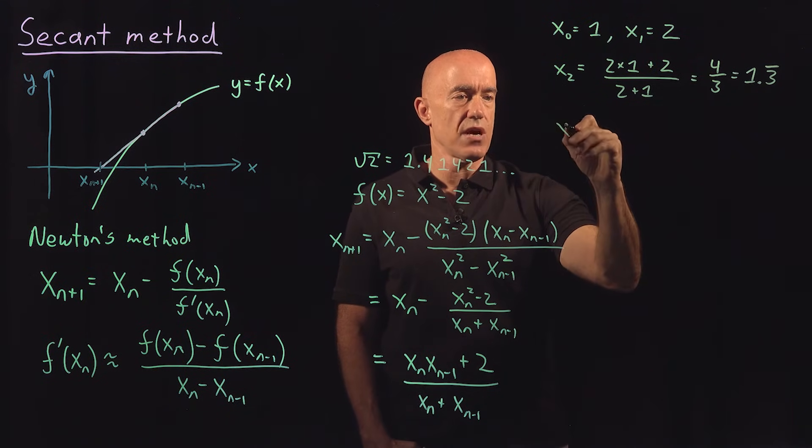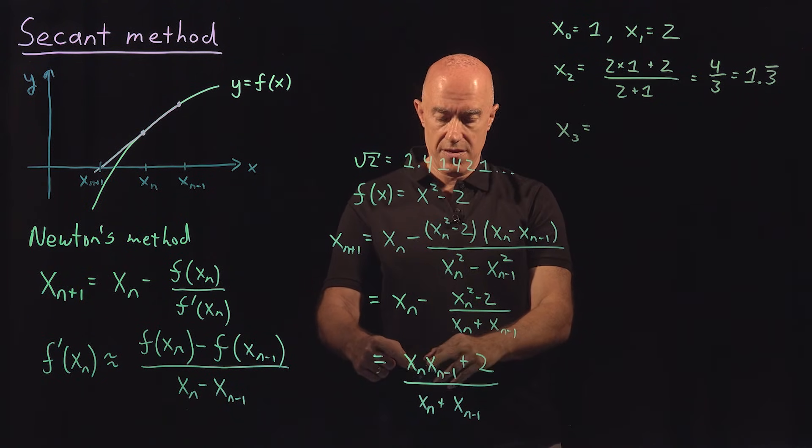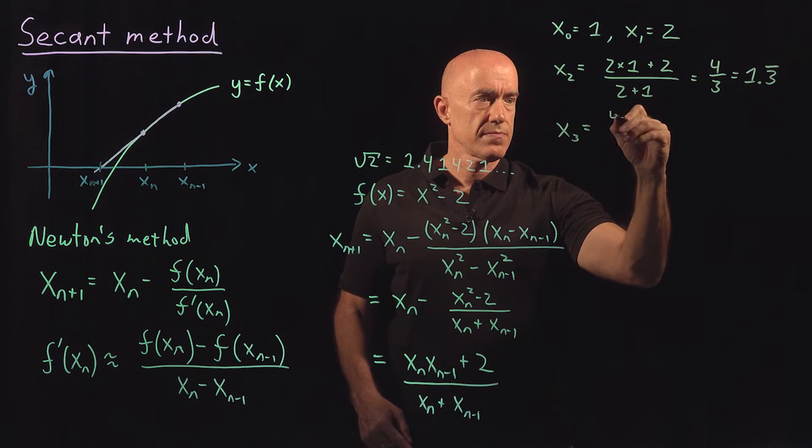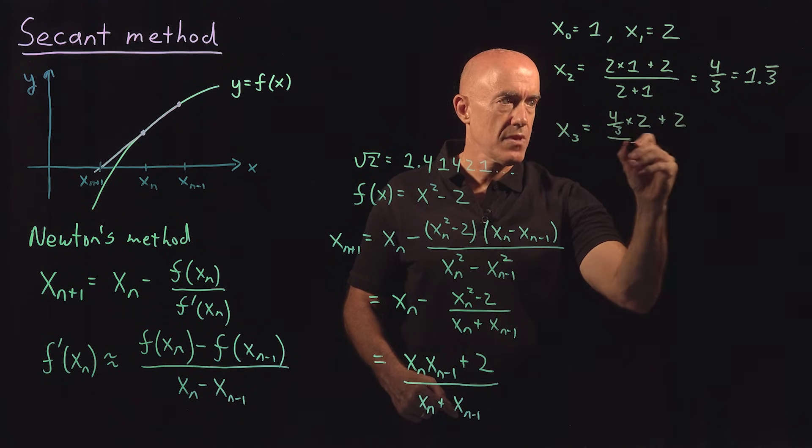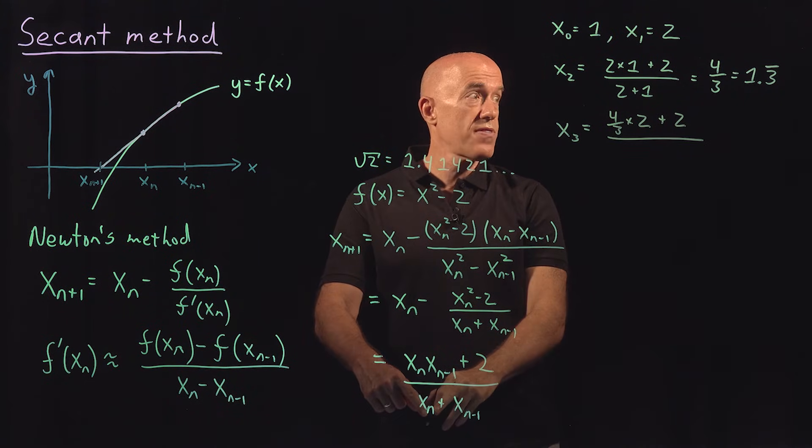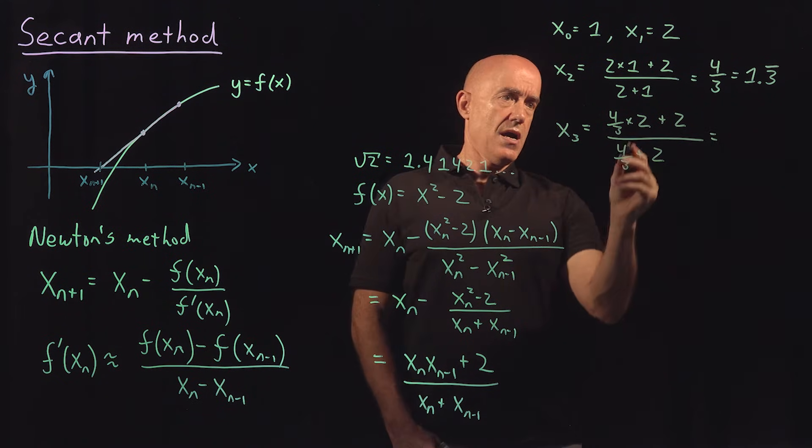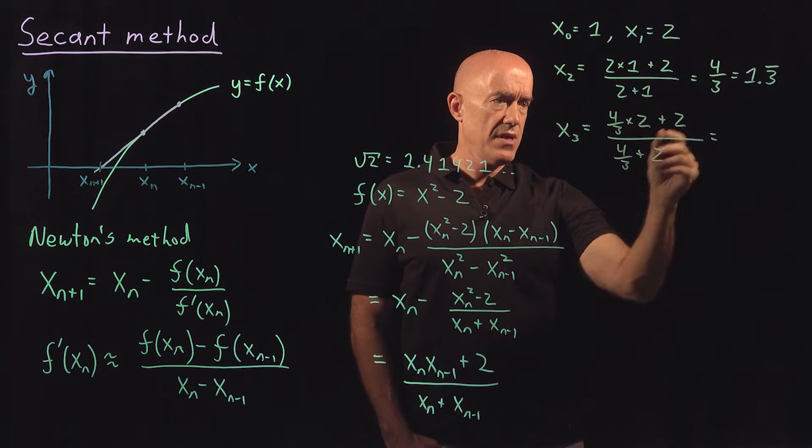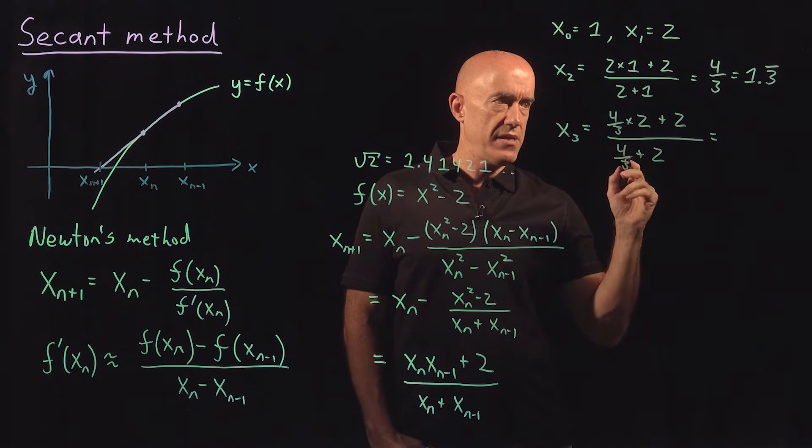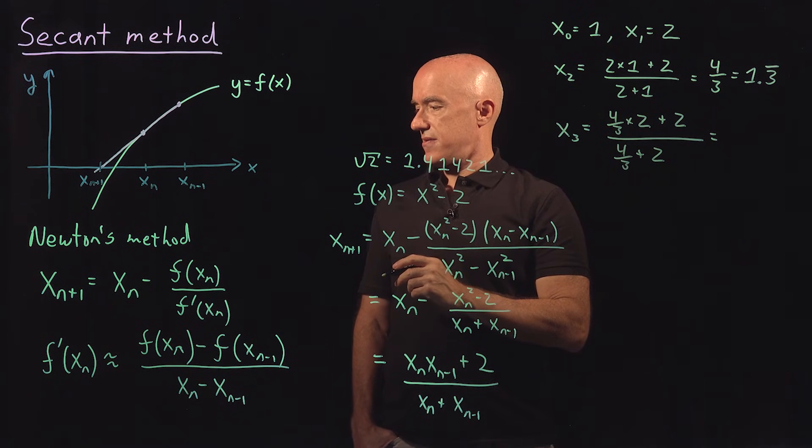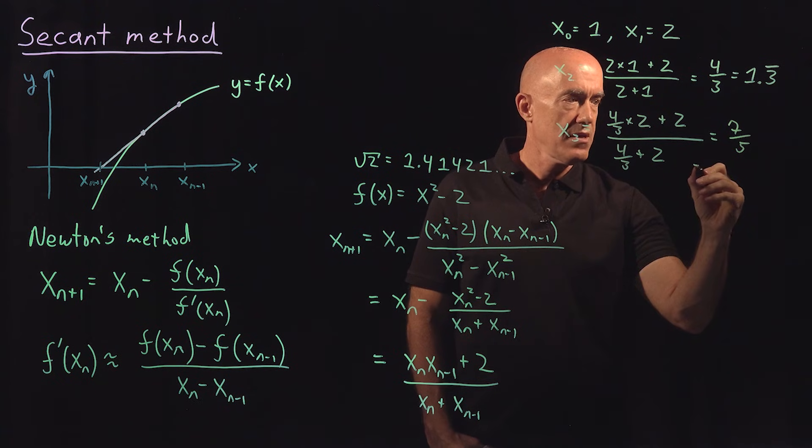Then the next one, x_3, using this formula, would be 4/3 times 2 plus 2 over 4/3 plus 2. This would be 8/3 plus 2 divided by 10/3, so this turns out to be 7/5.